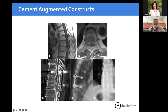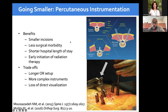With better screw pullout from cement augmentation, you can go smaller — constructs going one up and one down, cementing through those screws, and they really hold. Comparing previous images of screws going several levels up and down to now spanning just three levels with the same stability is striking. You can still achieve the same level of decompression, the thecal sac is reconstituted, and you can treat with radiation.